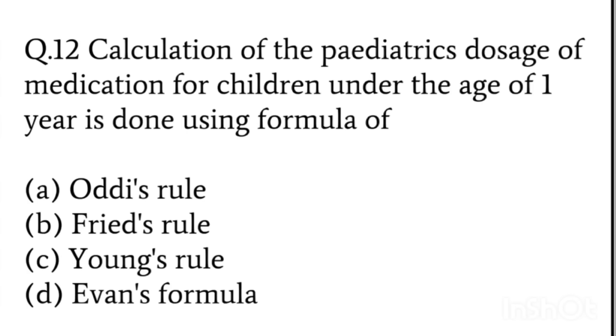Calculation of the pediatric dosage of medication for children under the age of one year is done by using which formula? Odi's rule, Fried's rule, Young's rule, or Ivan's rule. Yes, the answer is Fried's rule.